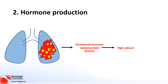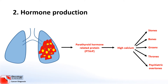A good way of remembering the symptoms of high calcium in the blood is this rhyme: stones, bones, groans, thrones, and psychiatric overtones. Stones relates to the development of kidney and gallstones. Bones refers to bone pain. Groans is abdominal pain, nausea, and vomiting. Thrones relates to something called polyuria, which is passing lots of water, and psychiatric overtones relates to depression, cognitive problems, and insomnia — which are all symptoms of high calcium.